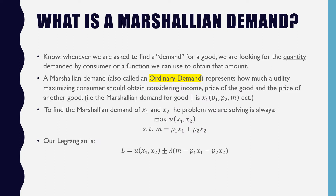What is Marshallian Demand? Whenever we're asked to find the demand for a good, we are looking for the quantity demanded by a consumer, or a function by which we can use to obtain that amount. A Marshallian Demand, which is also called an ordinary demand, represents how much a utility-maximizing consumer should obtain considering income, price of the good, and price of another good. For example, the Marshallian Demand of good 1 is x1 as a function of price of good 1, price of good 2, and income m.